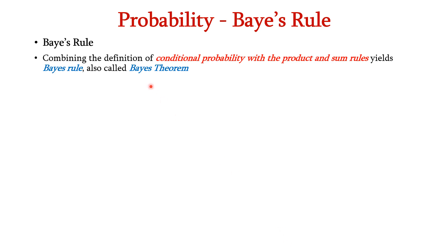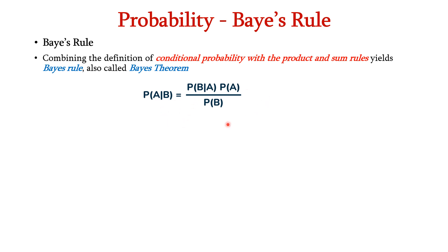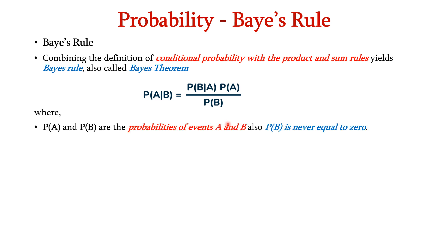Now let us see about Bayes' rule. Combining the definition of conditional probability with the product and sum rule gives us Bayes' rule, also called Bayes' theorem. This can be expressed as P(A given B) equals P(B given A) times P(A) divided by P(B), where P(A) and P(B) are the probabilities of events A and B, and P(B) is never equal to 0.